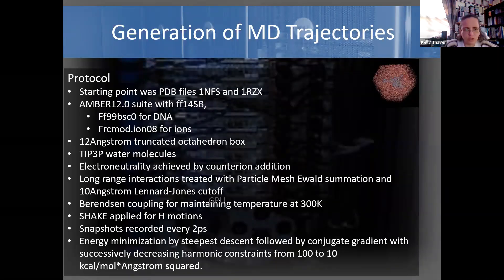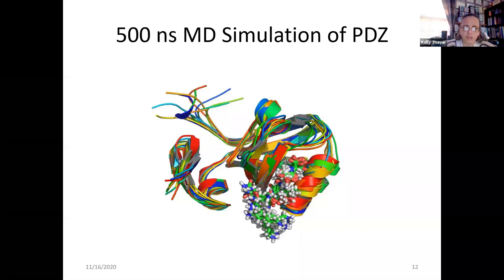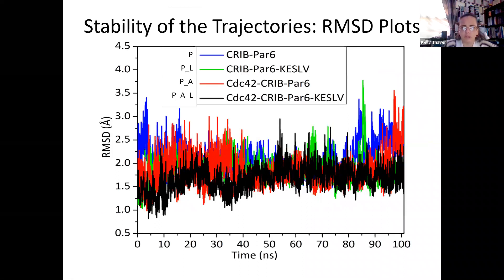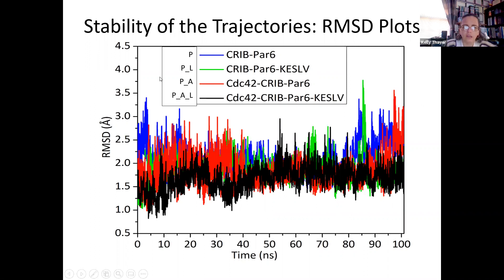We generated MD trajectories in the usual way, running 500 nanoseconds of PDZ simulation. These snapshots are from the simulation. We then checked stability using root mean square deviation plots — the RMSDs are relatively stable at around two angstroms or a little more, which is typical for MD simulations. We concluded we were ready to do some analysis.